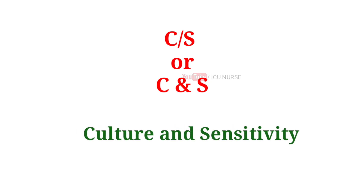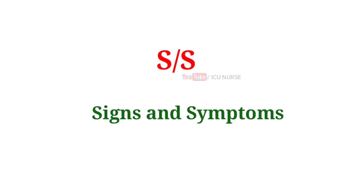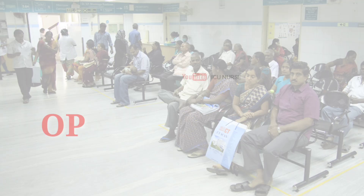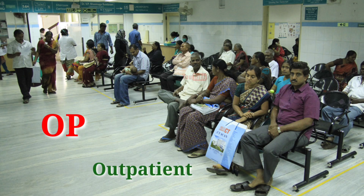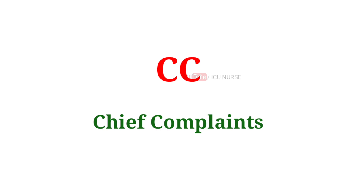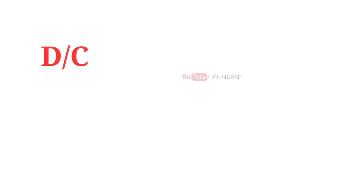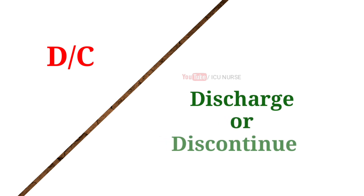CS or C&S: culture and sensitivity. SS: signs and symptoms. OP: outpatient. IP: inpatient. CC: chief complaints. Pre-op: pre-operative. DC: discharge or discontinue.